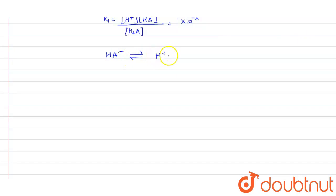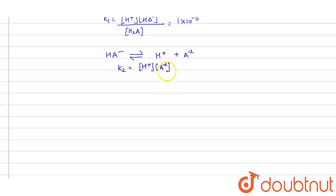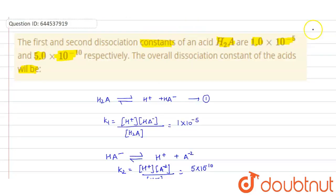Similarly, HA⁻ further dissociates into H⁺ plus A²⁻. For this we can write: K2 equals H⁺ concentration times A²⁻ concentration divided by HA⁻ concentration. K2 is equal to 5×10⁻¹⁰. This is the value of K2 given in the question.